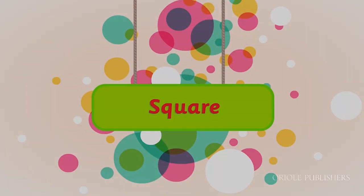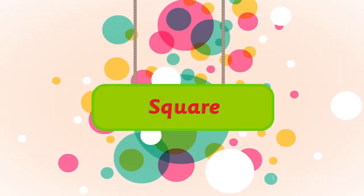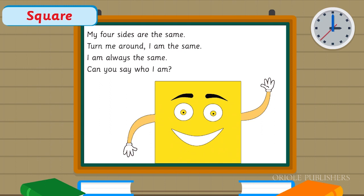Square. My four sides are the same. Turn me around, I am the same. I am always the same. Can you say who I am? Hi, I am a square.